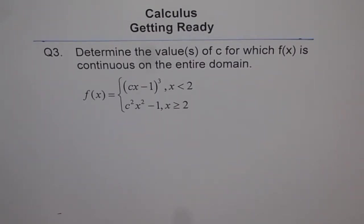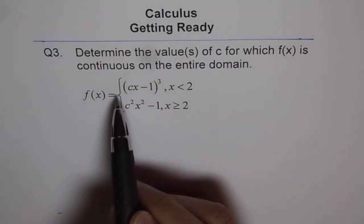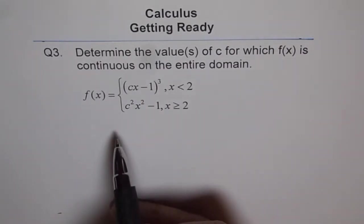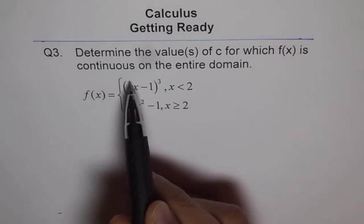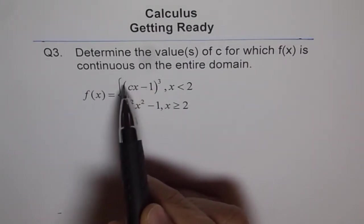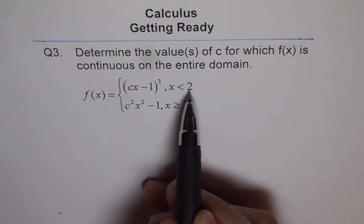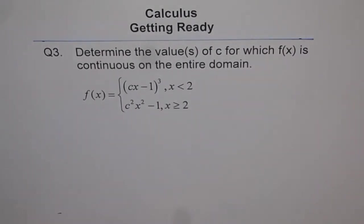Now, how will you do this question? The first part of the function is a cubic function. This function is always continuous, but this function is only valid for x less than 2.